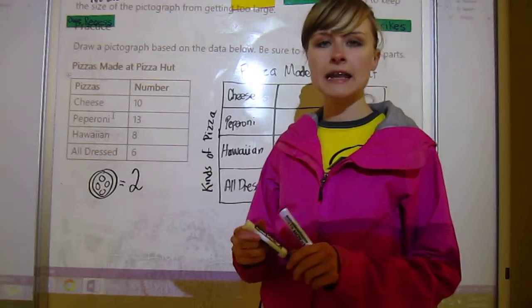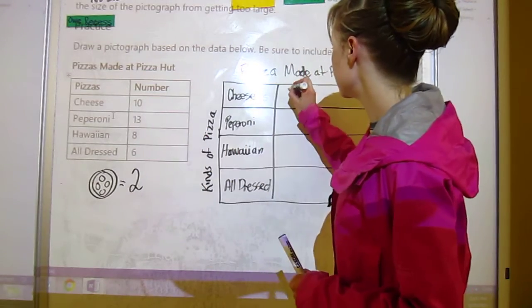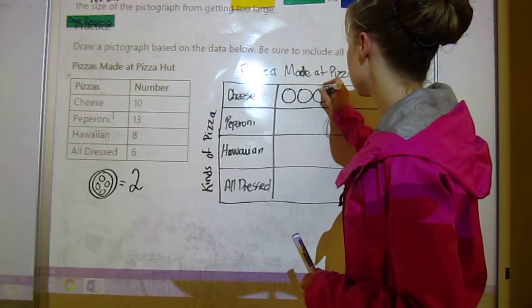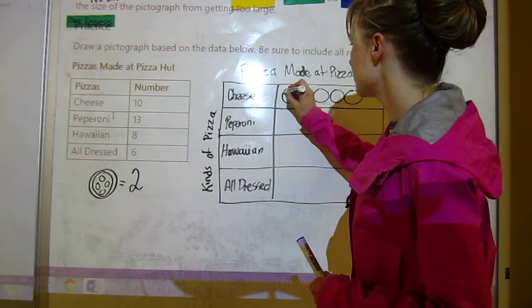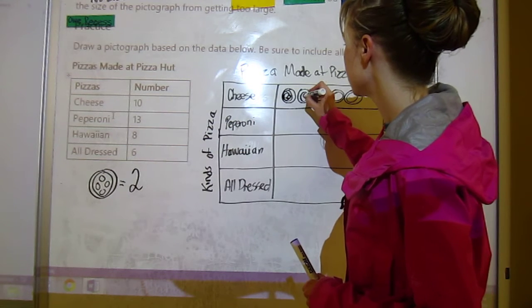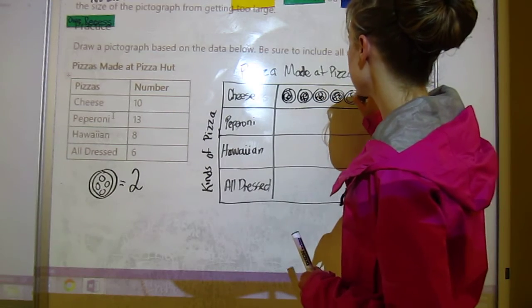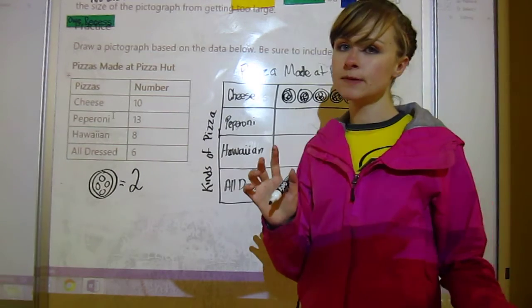Cheese has 10, that means that we need to draw five pizzas. So I'll draw five circles. I know cheese doesn't have circles like this but I want all my pictures to be the same - it's more important to do that.